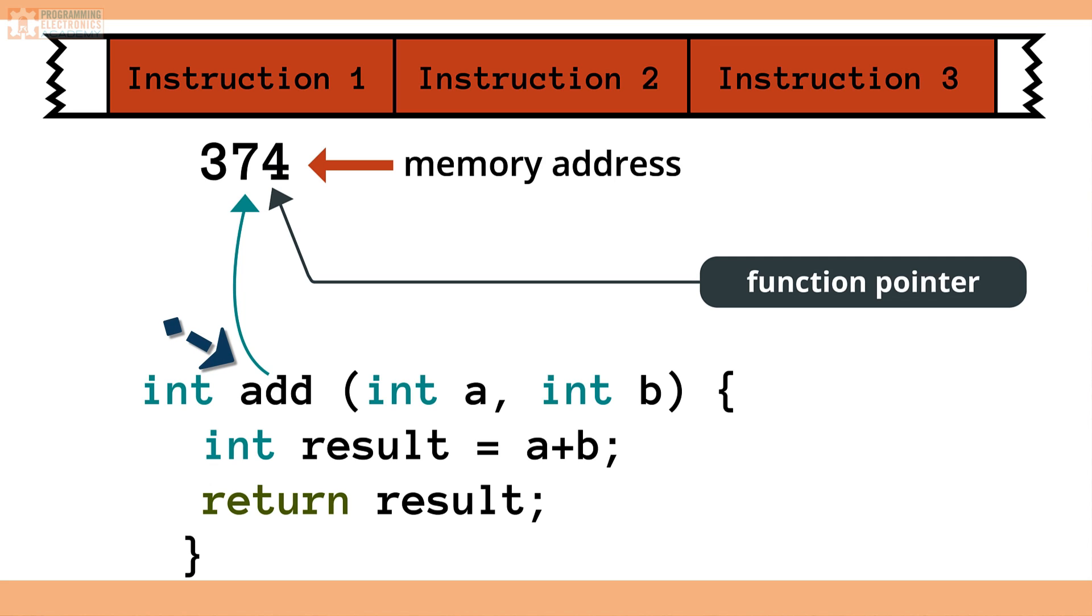And what's cool is that we can use function pointers just like we can use other pointers. We can store them in arrays, we can pass them to functions, and we can even return them from functions. What's really interesting to learn is that every time you create a function, you're actually creating a function pointer with the same name as your function. That is, the function name add holds the address of where the instructions for the add function starts.